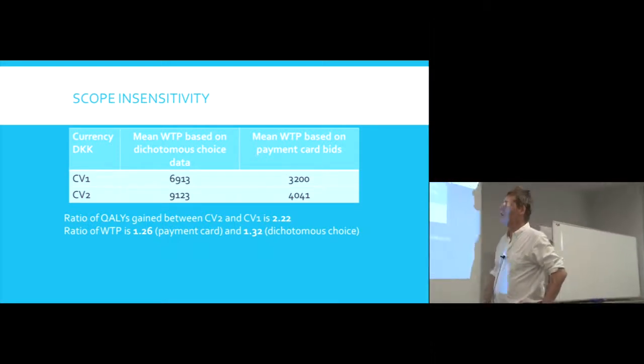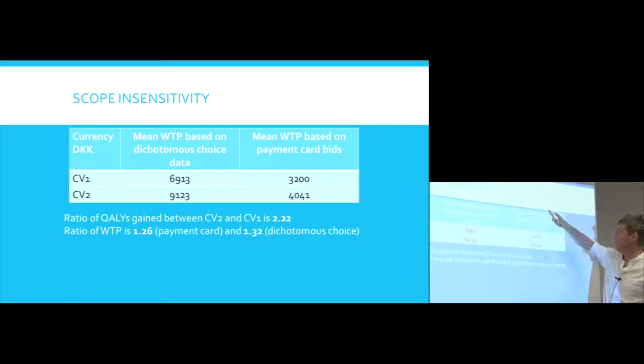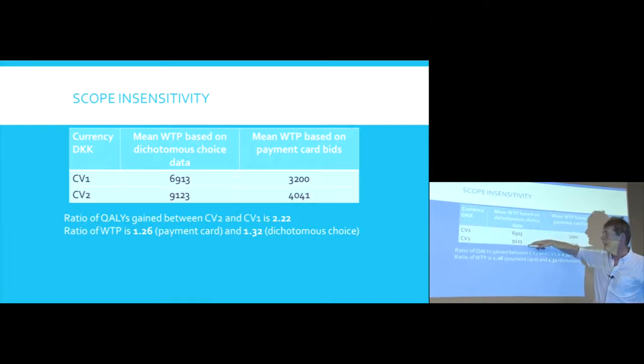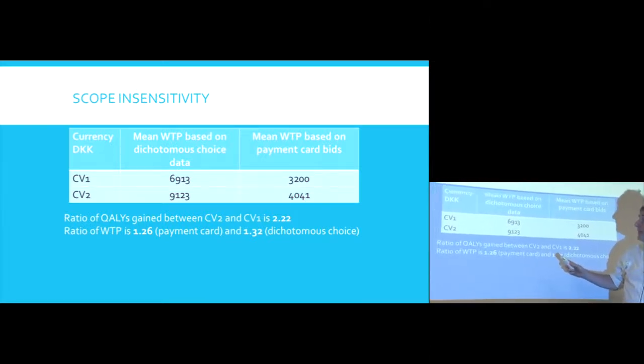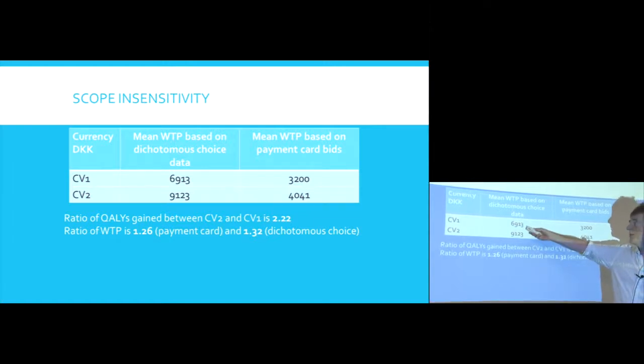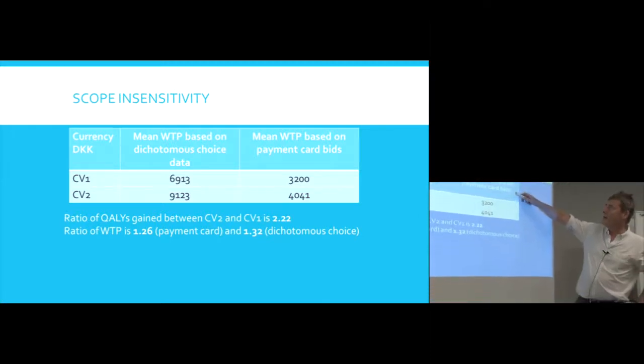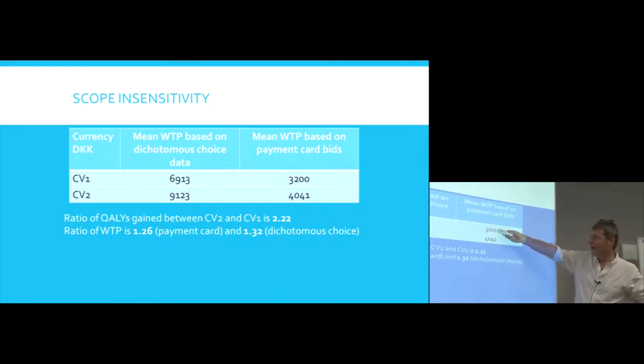So what they found, first of all there's two, dichotomous choice and then payment card. If we look first of all at dichotomous choice data, the mean willingness to pay implied by people's dichotomous choices was about 7,000 krona for the first program, about just over 9,000 krona for the second program. If we look at their mean willingness to pay using the payment card method, it was about half as much. So that's one problem, one method giving different values, but about 3,200 krona for the first program, CV1, slightly over 4,000 krona for CV2.